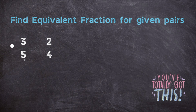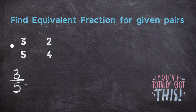Coming back to this question: find equivalent fractions for given pairs. We have two fractions — one is three upon five, another is two upon four. In fractions, most of the time you have to make the denominator the same. So here also we are going to do the same thing. First, we will write the fraction three upon five, and you have to see which number is in the denominator of the other fraction — here it is four — so multiply that number with the denominator which is five.